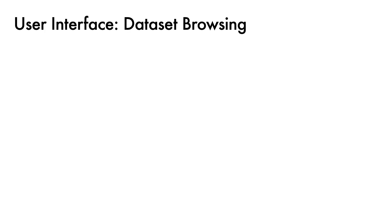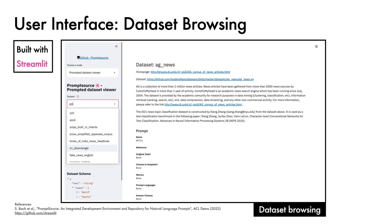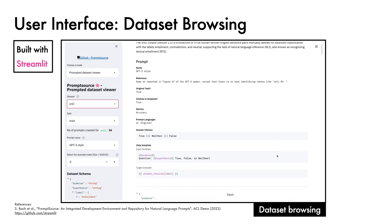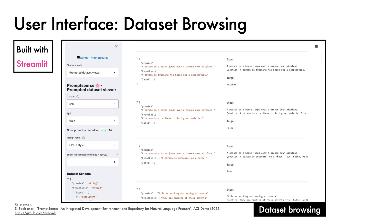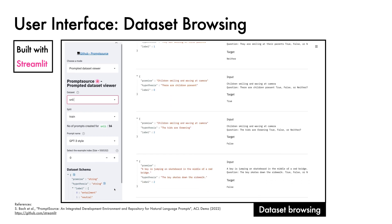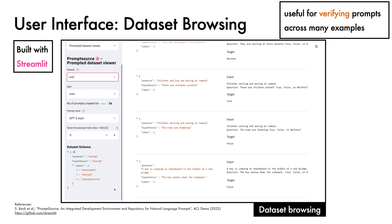The user interface is built with Streamlit, so it can be run in the browser. In the first view, which is for dataset browsing, we can jump to a dataset — in this case SNLI — and explore its metadata and examples, here presented with GPT-3 style prompts. This view is particularly useful for verifying prompt behaviour across a large number of examples.